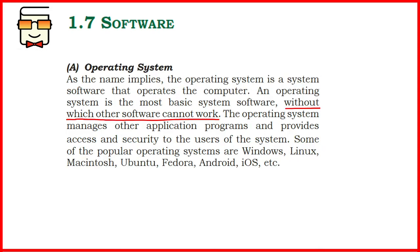Now coming to the first important type — the operating system. As I mentioned, this is the heart of a computer. It will start up the computer, it will allow other application programs to work, and it will allow different hardware to connect with the computer system and provide functionality. Examples of operating systems include Fedora, Ubuntu, Android, Windows, Linux, and so on.